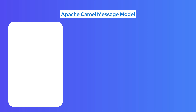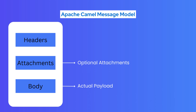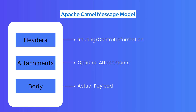Let's now quickly discuss about the message model of Apache Camel's integration framework. Typically, an Apache Camel message consists of three parts: Headers, Attachments, and Body. Body consists of the actual payload that needs to be transmitted between the source and target. Attachments are optional — you can attach any document to the message. The header consists of routing information such as the sender identifier, receiver, encoding, authentication, and other transport-related information.